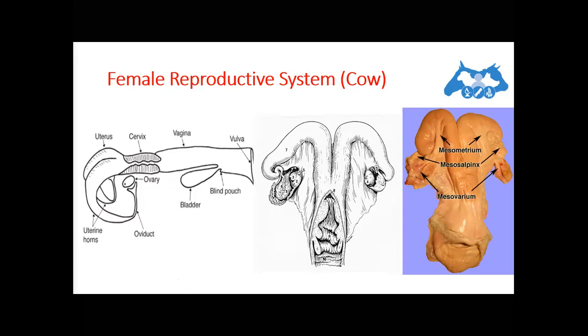The ovary, unlike the testes, it remains in an abdominal position throughout life. And the ovary has the gametogenic function, that means it produces ova, and an endocrine function which means it produces a number of hormones. I already told you progesterone and estrogens.